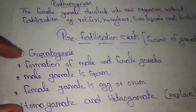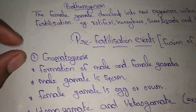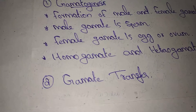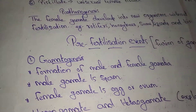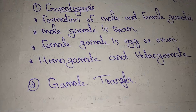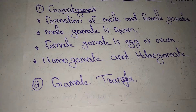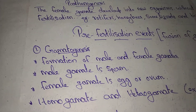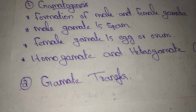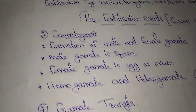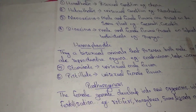Gametogenesis is the first point of pre-fertilization events. The second is gamete transfer. These are the pre-fertilization events. Like, share, support and subscribe. Thank you.